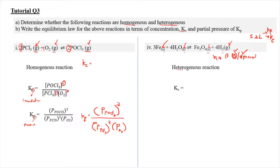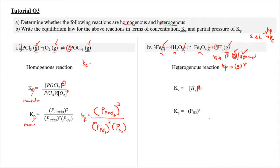For the Kc, we only include the hydrogen gas. So our Kc equals the concentration of H₂ gas to the power of 4, corresponding to its stoichiometric coefficient. For Kp, similarly we only include the gaseous phase since P refers to pressure. So Kp equals pH₂ to the power of 4. That's all for tutorial question 3.